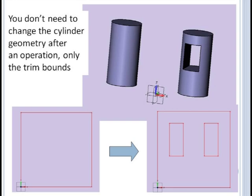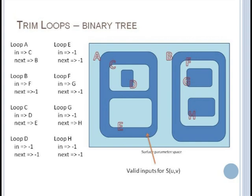These edge loops are referred to as trim loops and they're usually stored using some type of binary tree. Where one branch points to the next loop at the same level and the other branch points to the first loop inside the current loop. Every time you drop to another inside level the loop will alternate between being an island or a hole in the current island. In this example we have two outer loops A and B that are at the same level. So the next pointer for A is pointing to B and the next pointer for B is pointing to negative 1 to indicate it's the end of the linked list of loops at this level.